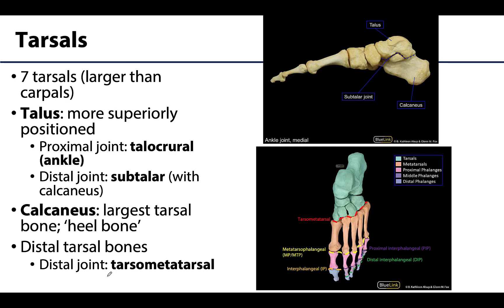In the ankle and hind foot region there are seven tarsal bones — one less than the carpals — but notably larger in size. Two specific tarsal bones to identify are the talus, the more superiorly positioned tarsal bone that articulates with both the tibia and fibula at the talocrural joint, and the calcaneus, the large heel bone, which articulates with the talus at the subtalar joint. We will return to this joint when discussing specific actions in the foot region.